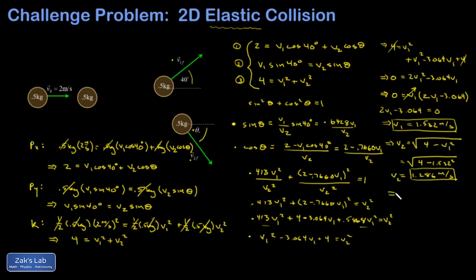All right, we've got our second answer. The last thing we need to do is find out the angle for that ball that was struck. So I'm going to go back and get that out of this equation right here: sin theta equals v1 sin 40 over v2. I have all those velocities: 1.532 sin 40 over 1.286. So theta is going to be the inverse sine of 0.766, and that means theta equals practically 50 degrees, so 50.0.